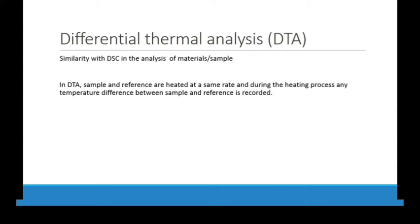If you remember from my previous lecture on DSC, we have two pans having separate heaters and these heaters are connected to a computer. If there is some extra material — our sample — placed in the sample pan, this material is extra and if it absorbs heat, the heater beneath that pan has to work more. But if there is some exothermic reaction, it releases heat and the heater beneath the sample pan does not have to work as much.